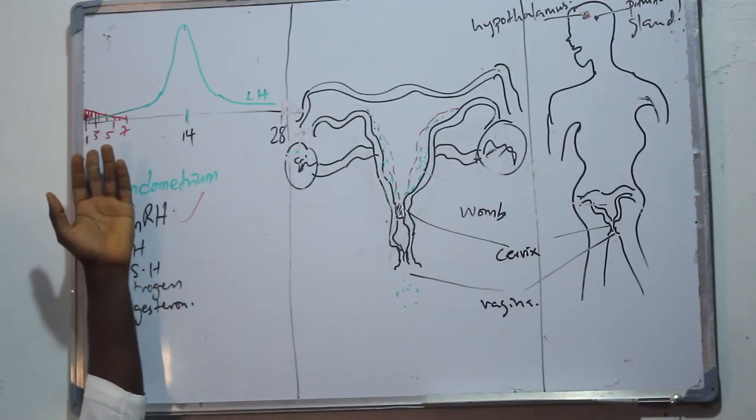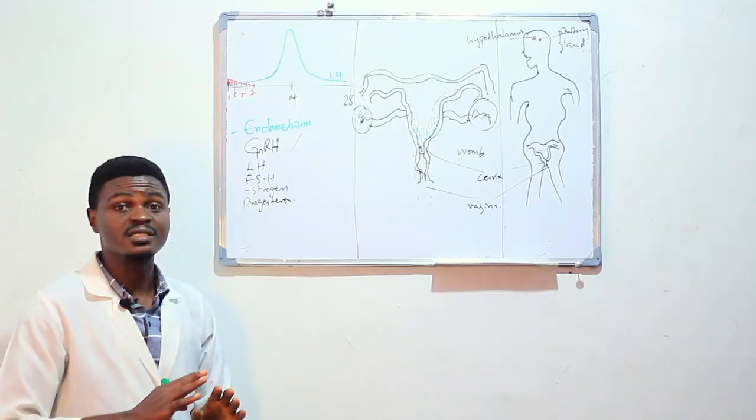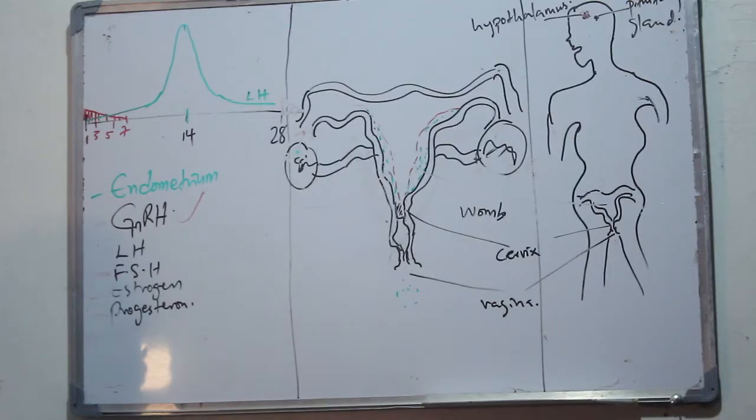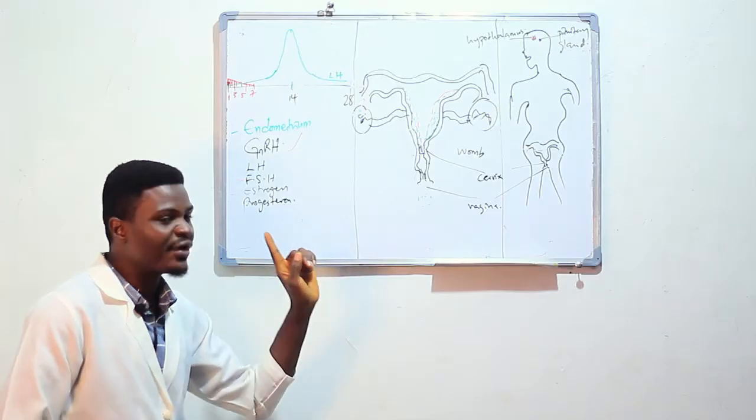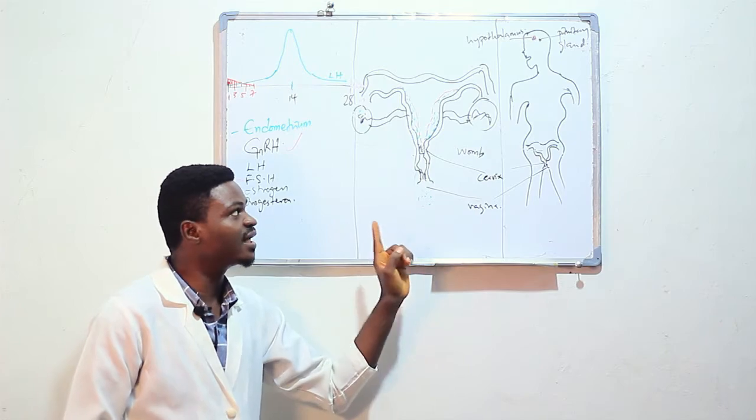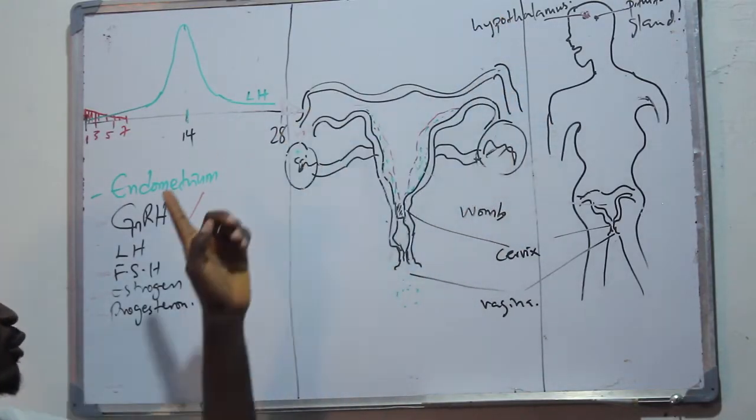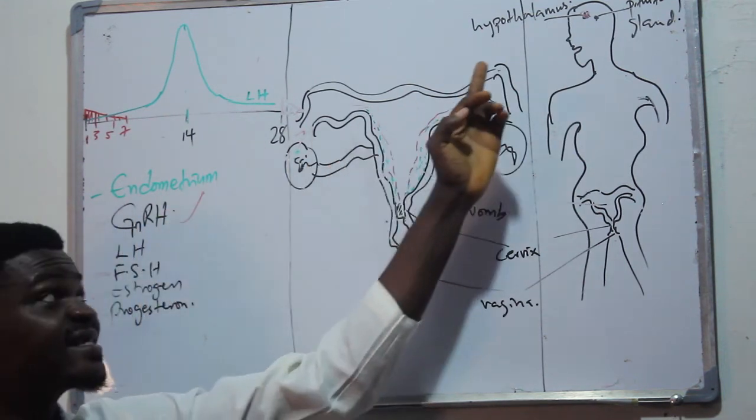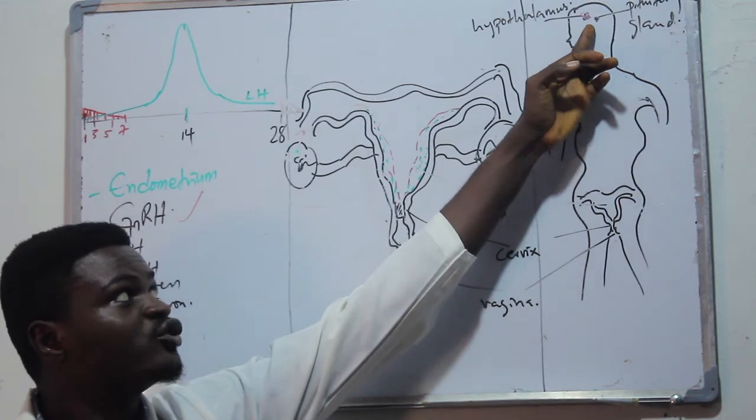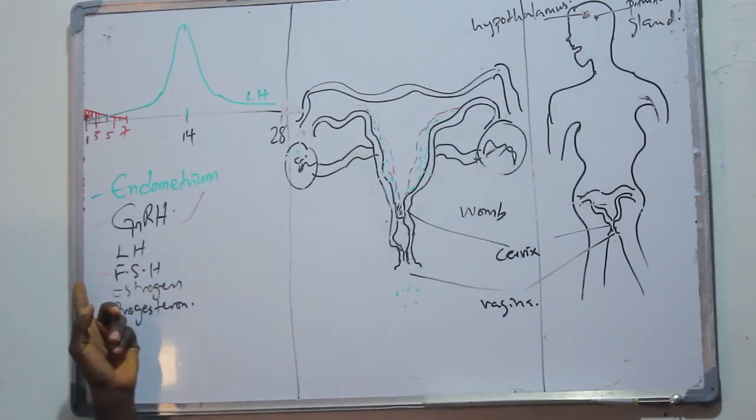Normal flow can happen between three to seven days, so if you have flow of three days, five days, six days, or seven days, it is normal. Once there is shedding of the endometrium, that particular gland in the brain called the hypothalamus will immediately begin to produce a hormone called the gonadotropin releasing hormone, which will in turn signal the pituitary gland just close to the hypothalamus to begin to produce another hormone called follicle stimulating hormone.